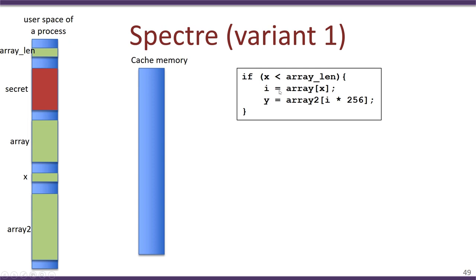Next we look at the user space part of the process. We assume there is secret information present here that the attacker wants to read. The other components of this code — the x array, array2, and array_len — are also shown in this user space. For simplicity, we assume i and y are stored in registers or elsewhere in the user space.